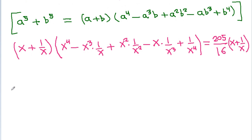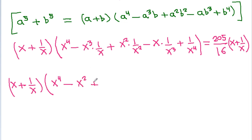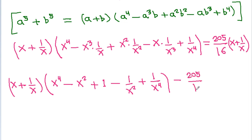So this becomes x plus 1 by x times x power 4 minus x cubed by x plus x squared by x squared minus x by x cubed plus 1 by x power 4, which simplifies to x plus 1 by x times x squared plus 1 by x squared minus 1. Setting this equal to 205 by 16 times x plus 1 by x gives x plus 1 by x times the bracket minus 205 by 16 times x plus 1 by x equals 0.